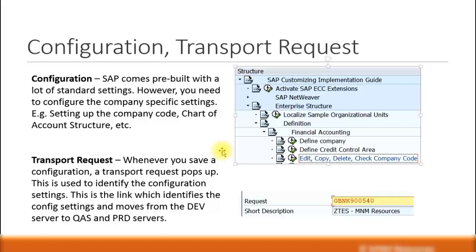Like we saw earlier, configuration settings can be moved from one client to another client. Every time you do a configuration, it generates something called a transport request — a unique number given by SAP. You can have different transport request numbers, and this transport request number will identify what configuration you did. For example, if you create a company code, you can link it to a transport request number and give the description 'creation of company code.' That is the transport request.